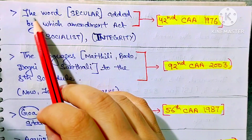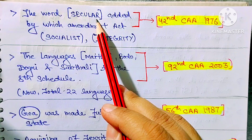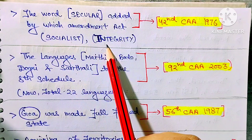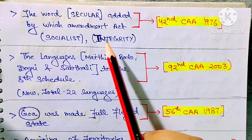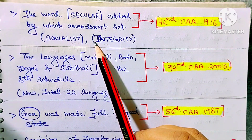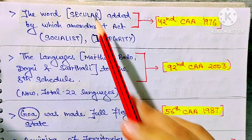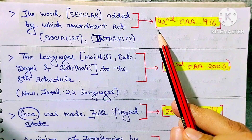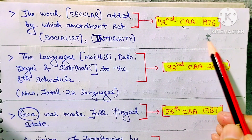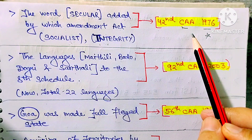Municipalities got constitutional recognition through the 74th Constitution Amendment Act 1992 — the same year as the 73rd, with only a one-number difference. Next: three words — Secular, Socialist, and Integrity — were added to our Preamble through the 42nd Constitution Amendment Act 1976. This is a very important point to remember.